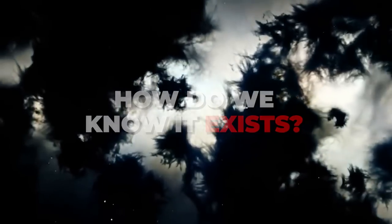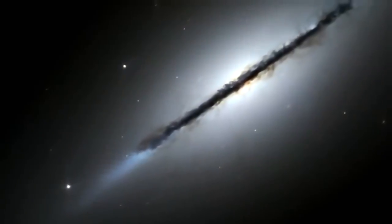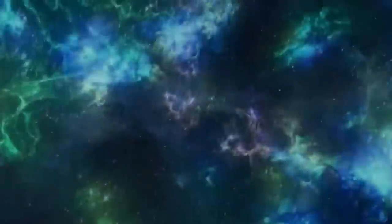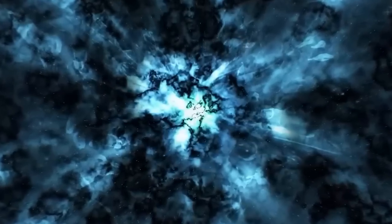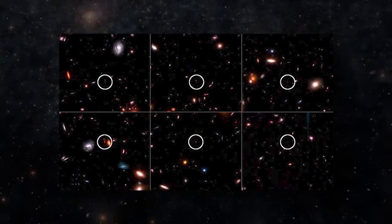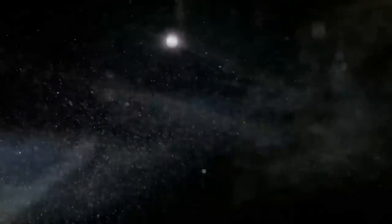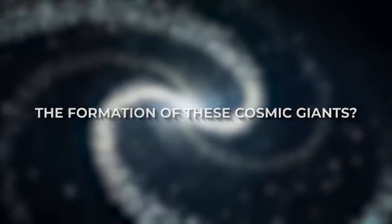Then how do we know it exists? That's an excellent question. The first clue came in the 1930s when a Swiss astronomer, Fritz Zwicky, noticed something odd about clusters of galaxies. The galaxies were moving so fast that they should have flown apart if only the gravity from visible matter held them together. But they didn't. Something unseen was holding these galaxies together. That unseen something was dark matter. Flash forward to today, and dark matter is still as elusive as ever. Scientists estimate that it makes up about 85% of the universe's matter. But what's really mind-boggling is that the presence of these six gigantic galaxies so early in the universe's history might be linked to this elusive dark matter. Is it possible that a dense concentration of dark matter could have accelerated the formation of these cosmic giants? Well, let's find out.